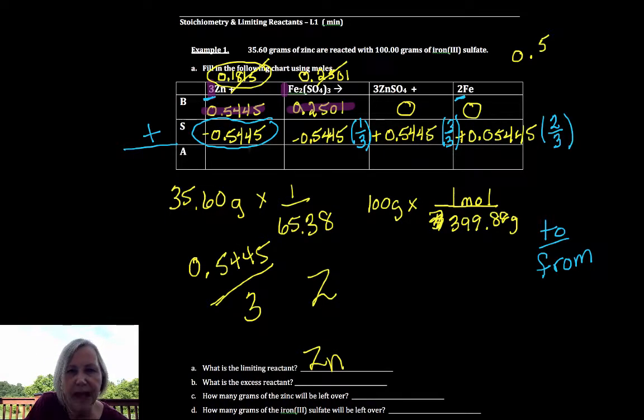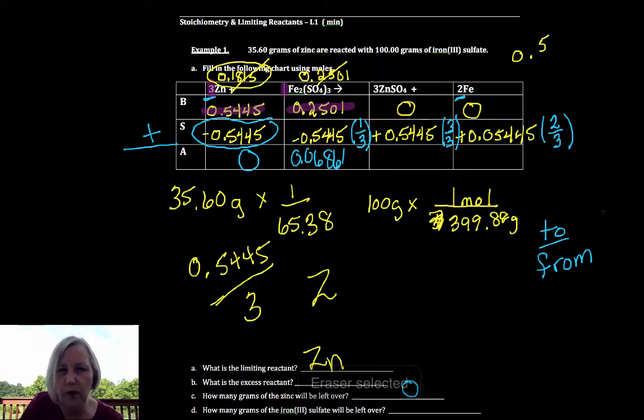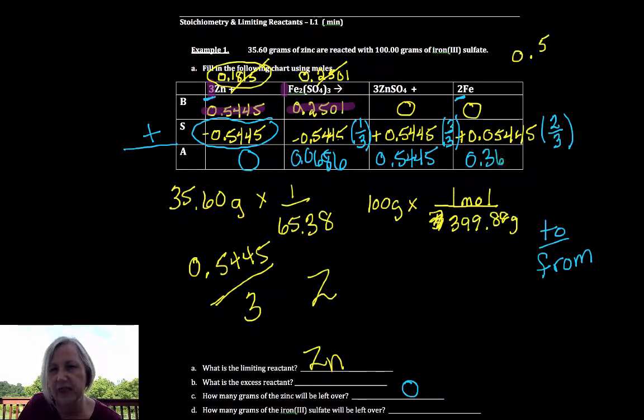If you add the BS, you get the after. All right. So of course, I'm out of limiting. That's the whole definition of the limiting. So there won't be any grams of zinc remaining. And I have 0.0686 moles. Remember, this is all in moles. And 0.5445 moles. And then I've got 0.363 moles. Okay.